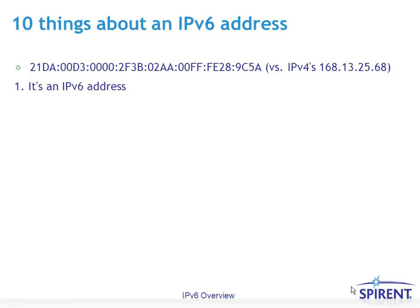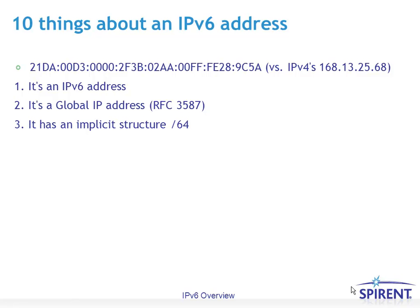The first thing I can tell you about that IPv6 address is it is an IPv6 address. Second, it's a global IPv6 address as per RFC 3587, because it begins in either a 2 or a 3. It has an implicit structure — we know that the first 64 bits are for the network, and the bottom 64 bits are for the host, or interface as IPv6 refers to it.